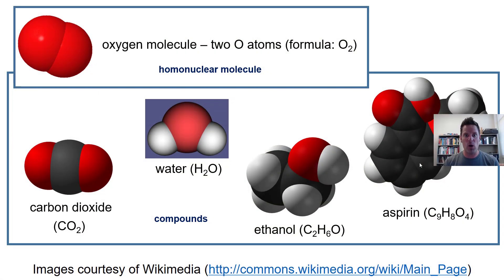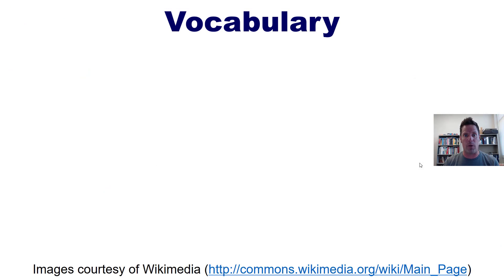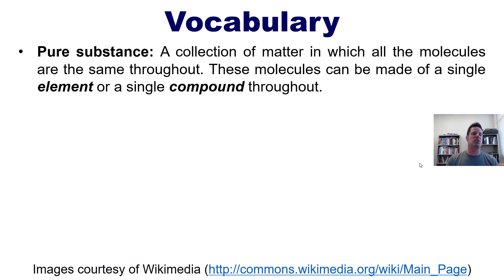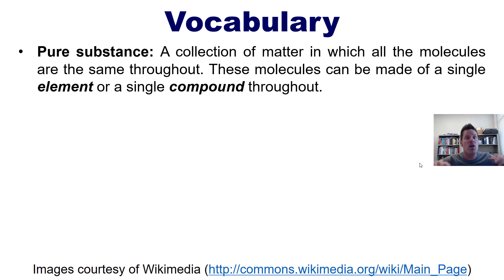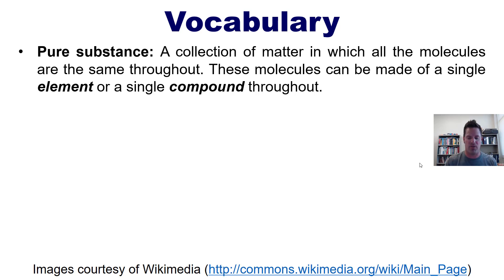Let's continue with more vocabulary. The next one is a pure substance. A pure substance is a collection of matter in which all the molecules are the same throughout. These molecules can be made of a single element or a single compound throughout.